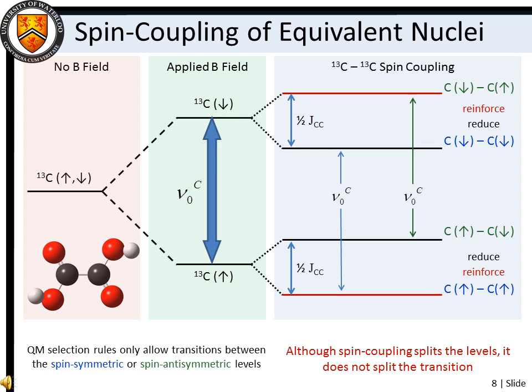Instead we must think of the atoms as either a spin-symmetric pair or a spin-antisymmetric pair upon exchange. NMR transitions occur between spin-symmetric energy levels or spin-antisymmetric energy levels. Consequently, while the energy levels are indeed split by spin-coupling interactions, the resulting transitions occur at precisely the same frequency as the original transition in the absence of spin-coupling.